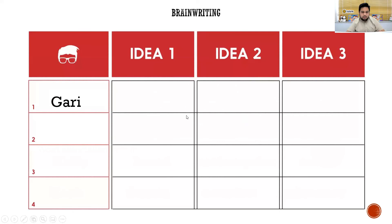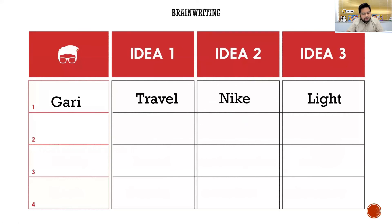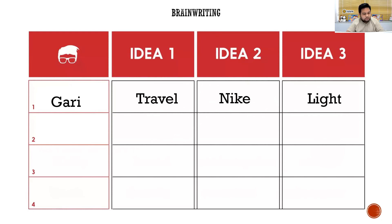I wanted to do Brain Writing with you guys but I'm running out of time. My first three words were going to be: travel, Nike, and light. What do you associate with travel? Hike, airplane, sightseeing. With Nike? Sneakers. With light? Comfortable. You'd then keep associating with the previous student's words, building a chain of associations through the class.